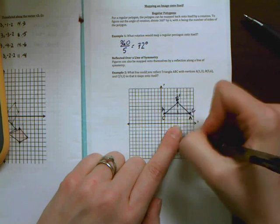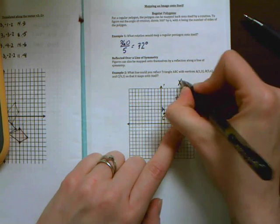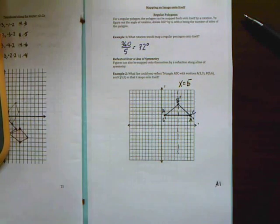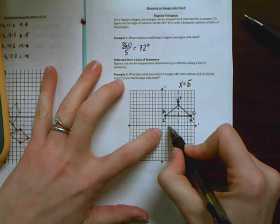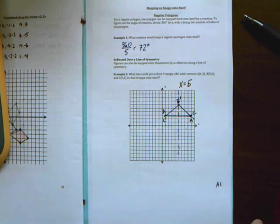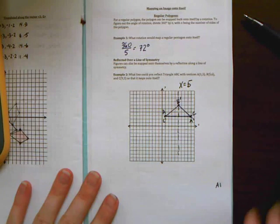So the equation of that line, remember that vertical lines are x equals 5. If it had been a horizontal line we would have put y equals something, but this is x equals 5 because I'm 5 over and all my x values are 5.